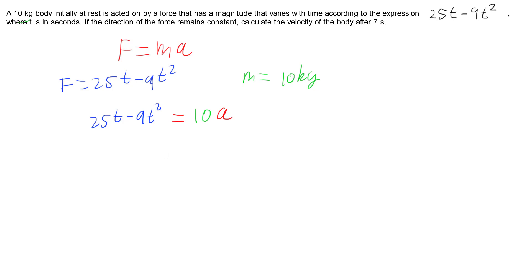And so that means we can get an expression for acceleration by dividing both sides by 10. 25 divided by 10 gives us 2.5t and negative 9 divided by 10, so we're going to have minus 0.9t squared. So now we've got an expression for acceleration and we know that acceleration is the change of velocity over time. So we can have dv/dt which equals our 2.5t minus 0.9t squared.